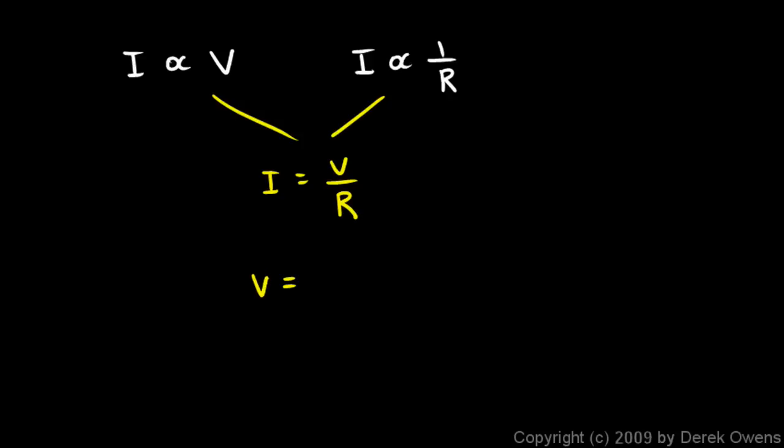And it's most commonly written like this, V equals I R. This is an easier way to think about it. The amount of current flow that you have is going to be bigger if you have a bigger value for V, and it's going to be smaller if you have a bigger value for R.